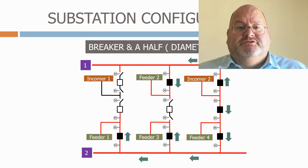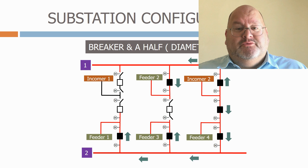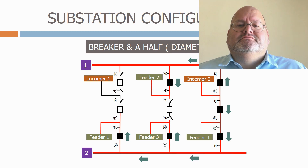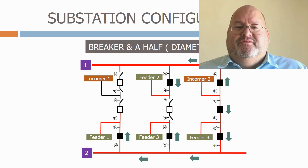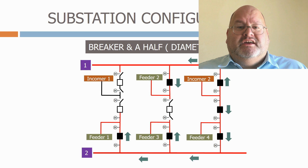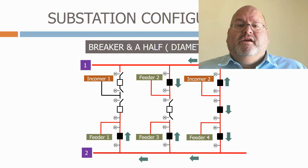The breaker-and-a-half arrangement is popular around the world as it gives a cost-efficient way of providing a very flexible design which is easy to expand should system demands increase. The number of bays that can be tied together is virtually unlimited — I have worked on high voltage transmission substations that have had over 25 diameter bays. The layout of a diameter substation also takes up less physical space compared with an equivalent double bus bar substation, which can save substantial amounts of money on land purchase.